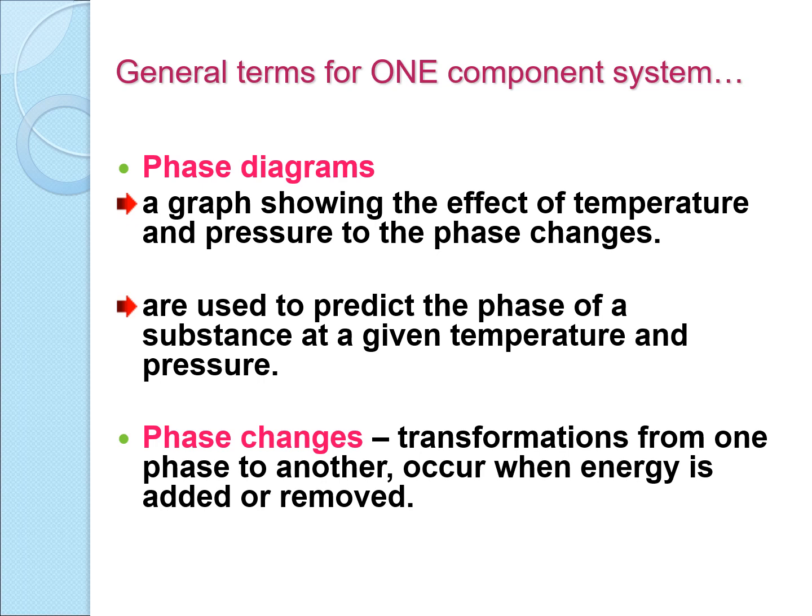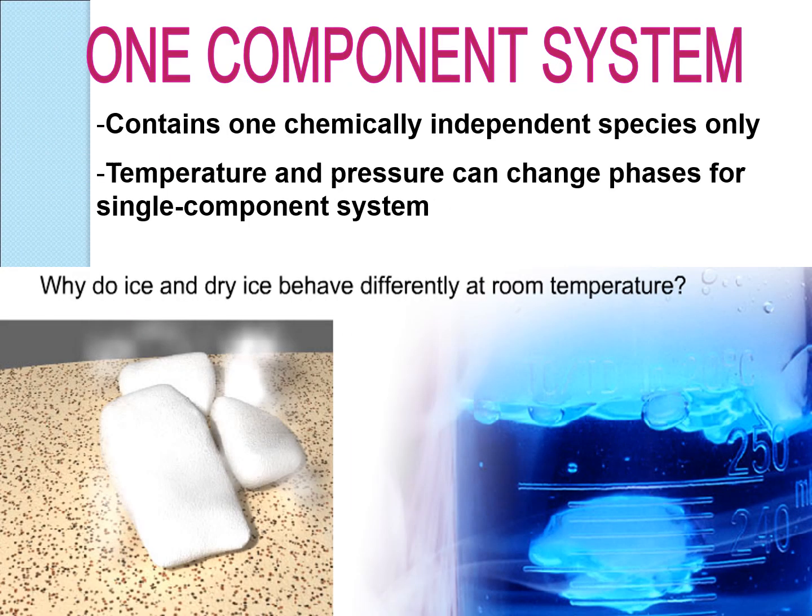What is a single component system? We have to look at the phase diagram, which is a graph showing the effect of temperature and pressure on phase changes. Phase diagrams are used to predict the phase of a substance at a given temperature and pressure. We can see the phase changes whereby a substance transforms from one phase to another, and this occurs when energy is added or removed. Here we are talking about only one chemically independent species, and the question is: how do we explain why ice and dry ice behave differently?